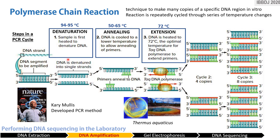In denaturation, extracted DNA, primers, polymerase, buffers, and other core ingredients are heated to 94 to 95 degrees Celsius. This breaks the bonds between the two strands of DNA, which will both serve as the template for the production of new DNA strands.